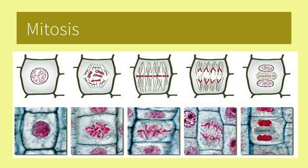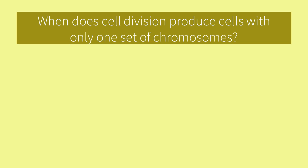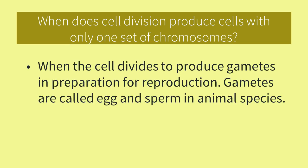Here we see the entire process, from interphase through cytokinesis. When does cell division produce cells with only one set of chromosomes? These cells are gametes, egg and sperm in animals, and are used for reproduction. This process is called meiosis.